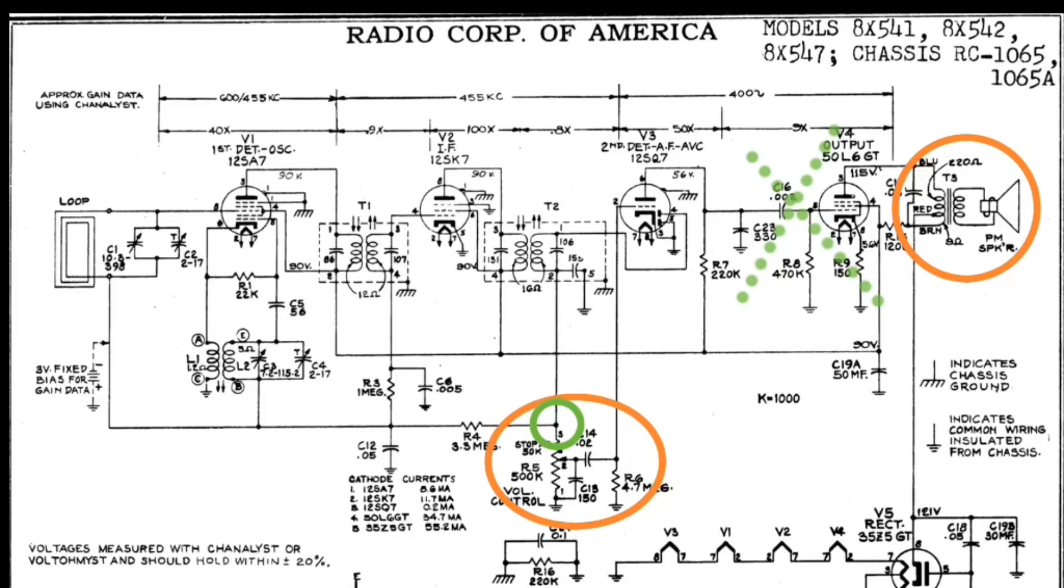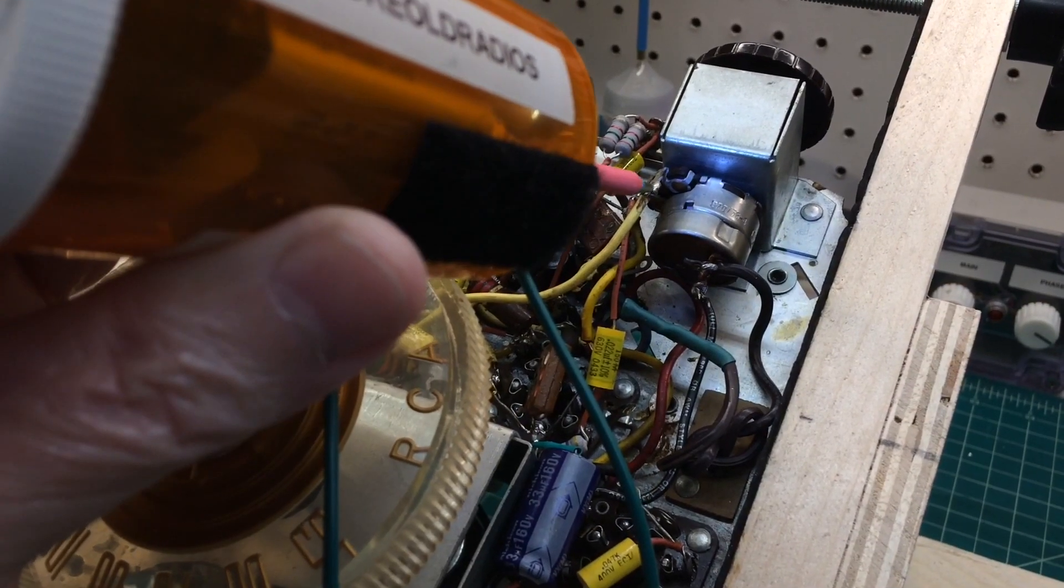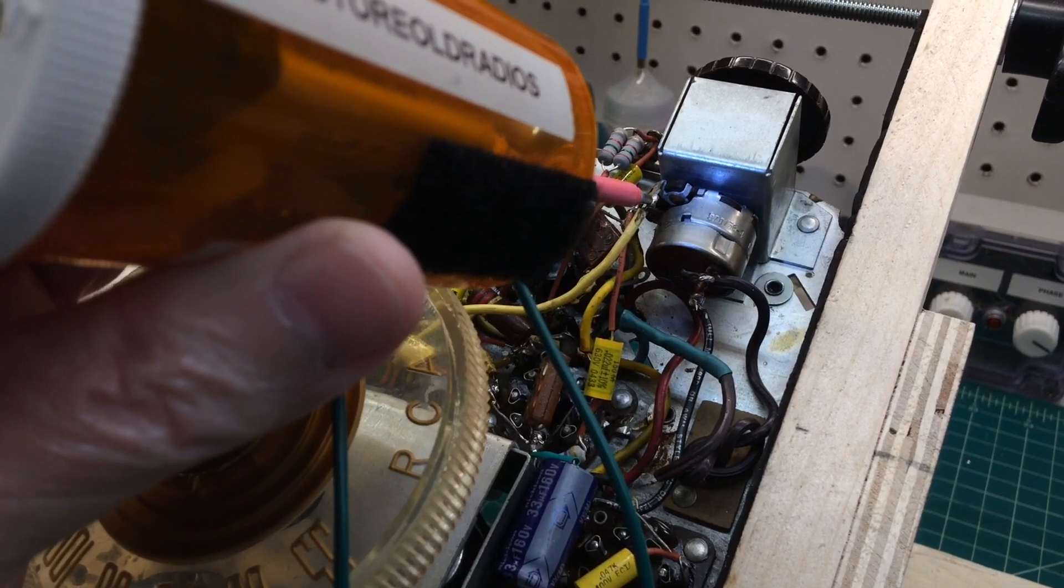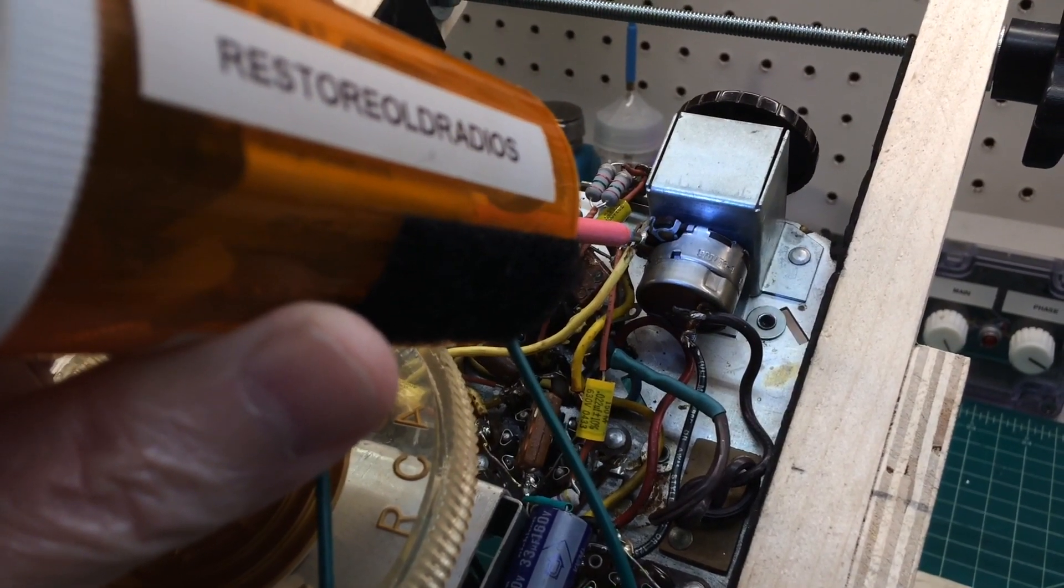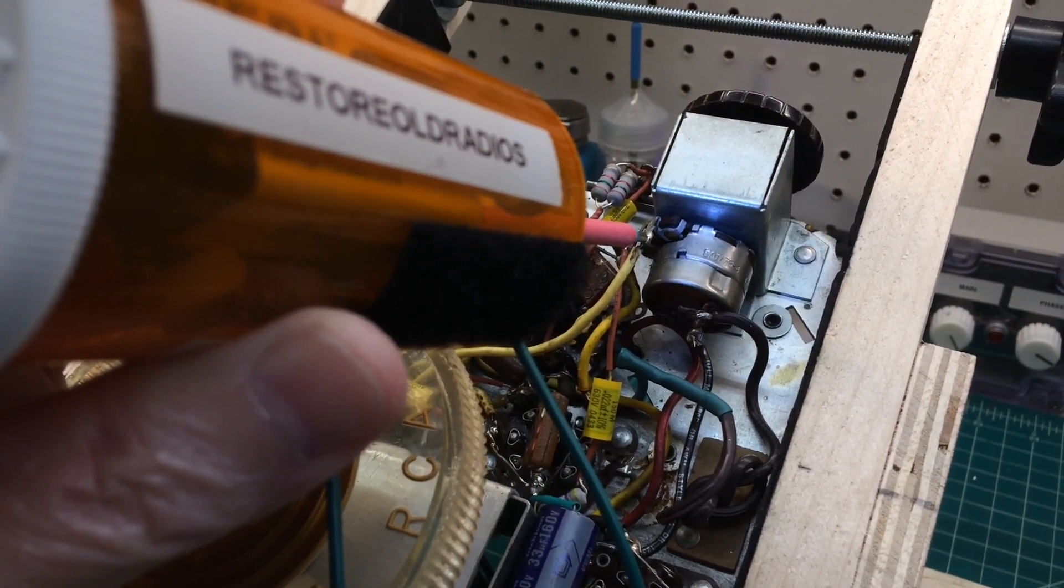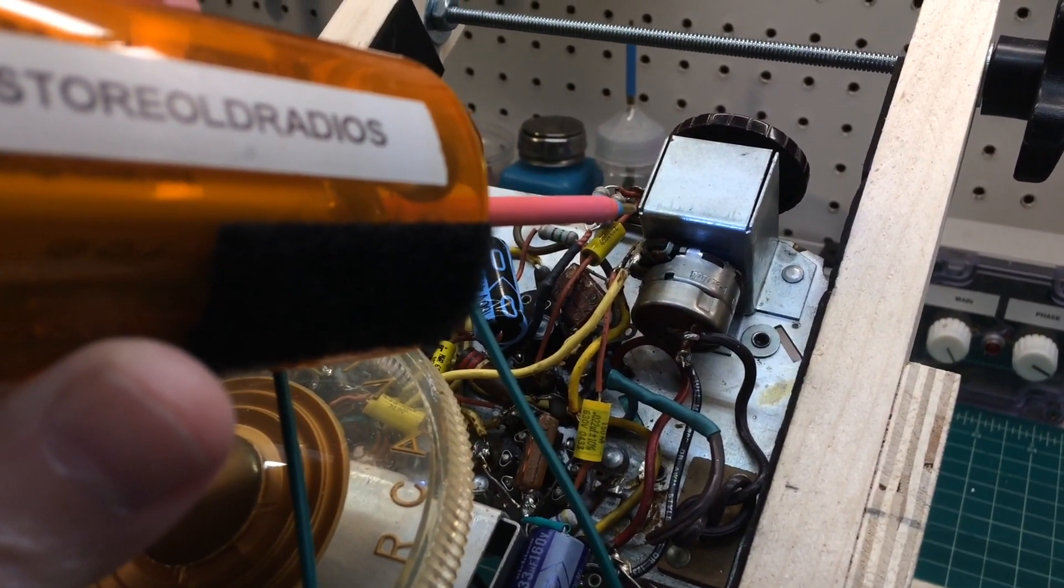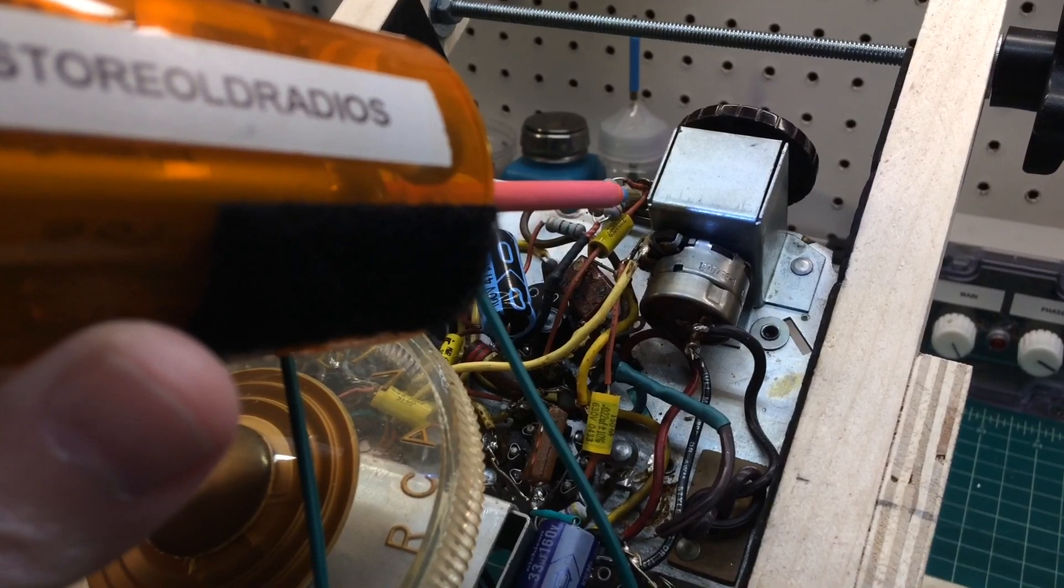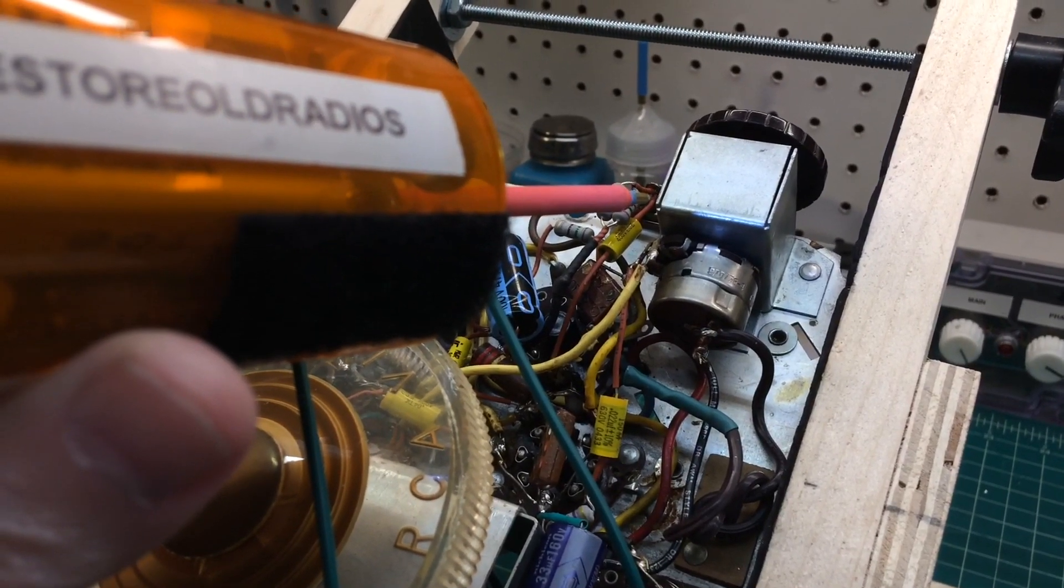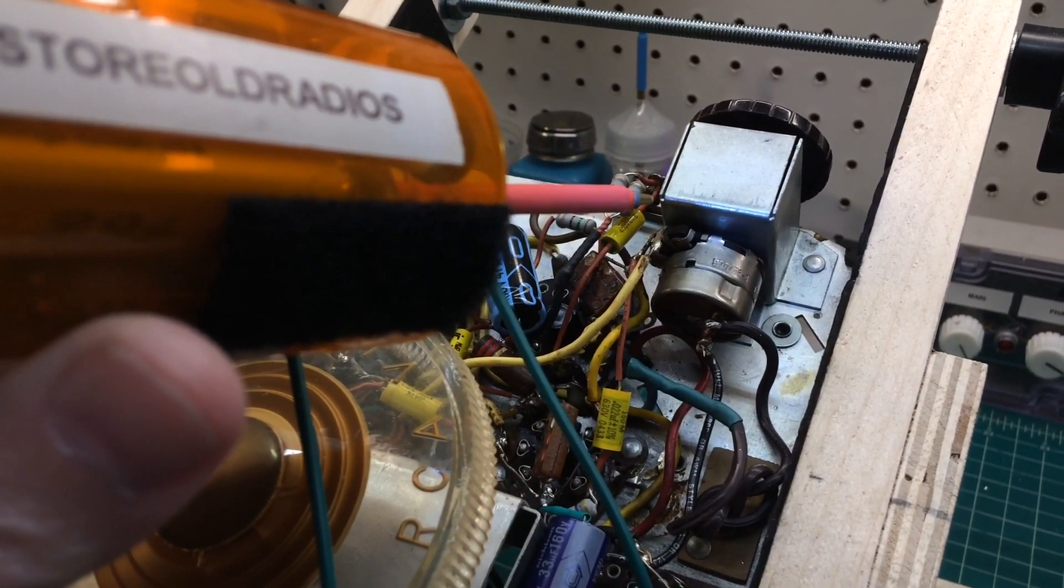Let's attach the signal tracer there and just confirm that we have the noise at that point. We'll keep working our way back toward the front end of the receiver. Let's check the high side of the volume control here. And indeed, that problem is there. So we know it's back toward the front end and not in the audio side of the circuit itself.